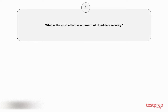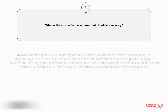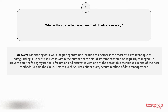Question number 3: What is the most effective approach of cloud data security? Monitoring data while migrating from one location to another is the most efficient technique of safeguarding it. Security key leaks within the cloud storage should be regularly managed. To prevent data theft, segregate the information and encrypt it with one of the acceptable techniques. Within the cloud, Amazon Web Services offers a very secure method of data management.